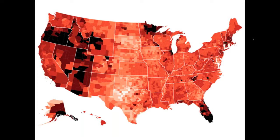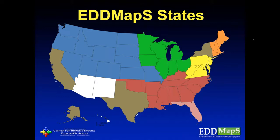Florida is where a good bit of our data is from. Looking across the U.S., you can tell there are a few states like Minnesota and Utah where there's a lot of data going into the system, and other areas where counties are smaller — so this map doesn't show the density as well — and there's just not as much data being collected.